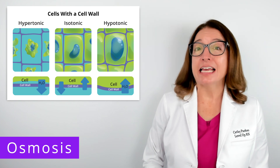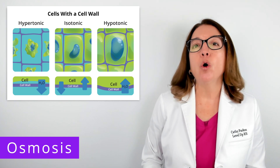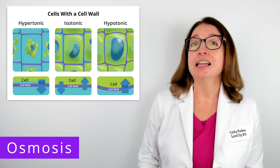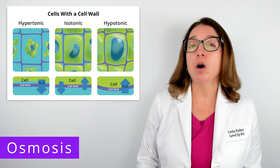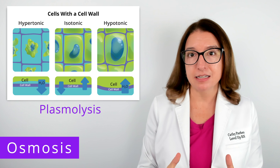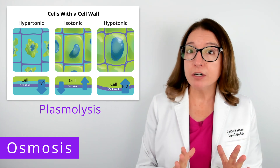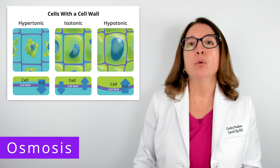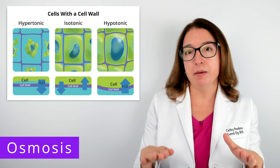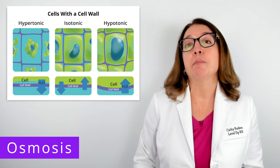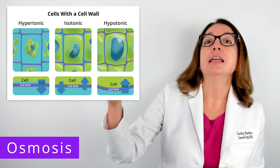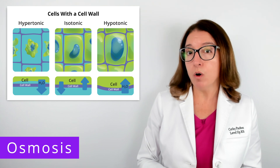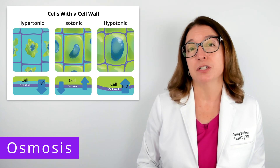Now let's look at the effect of these same three osmotic solutions on a cell with a cell wall, such as a bacterial cell or plant cell. In a hypertonic solution, water will leave the cell, resulting in plasmolysis, where the plasma membrane shrinks and detaches from the cell wall. In an isotonic solution, there will be no net movement of water. In a hypotonic solution, water moves into the cell causing it to swell; however, the cell wall provides increased protection against lysis.